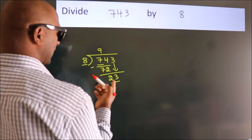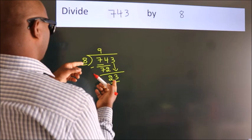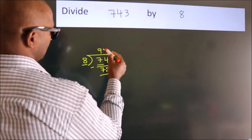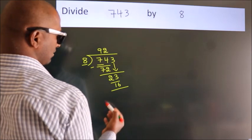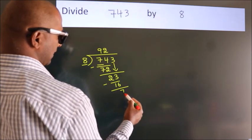A number close to 23 in the 8 table is 8 twos, 16. Now we subtract. We get 7.